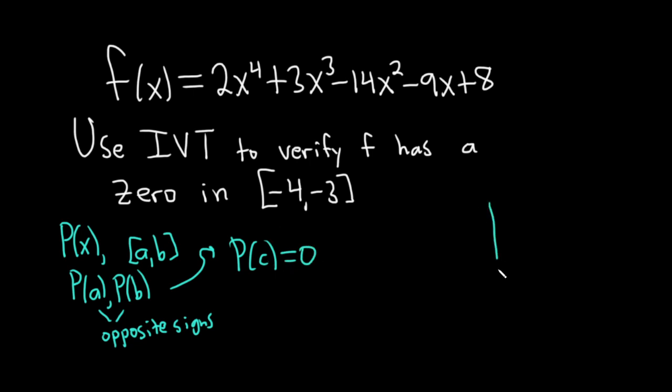Basically this is just the intermediate value theorem. It's saying if you have something like this and this is b and this is a, so this is p of a down here and this is p of b up here, you see the sign changes so it has to be zero at some point in this interval. So that's the main idea.